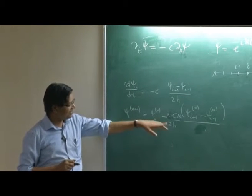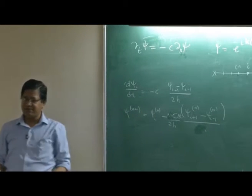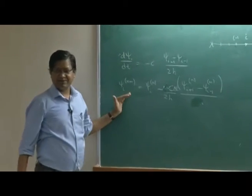Given psi n I can go to psi n plus 1 for every i. So that means I got the values at next time step, then next time step, next time step. I can go from t equal to 0 to t final. Now question is, is this scheme stable?